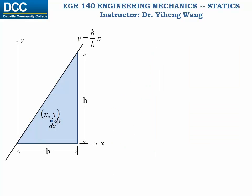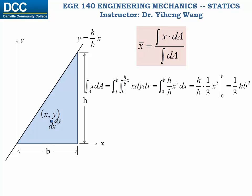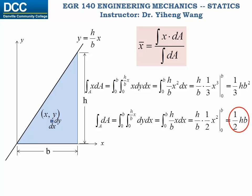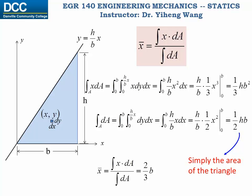First we calculate for x bar. The numerator is an integration of x times dA, integrated along the y axis from 0 to the line h over b x, and along the x axis from 0 to b. And we get one third h b squared. We do the same thing with the denominator, which is one half h times b. You might notice this is simply the area of the triangle, one half height times the base. That is correct. The denominator in this formula is simply the total area. Therefore x bar is calculated to be two thirds times b.